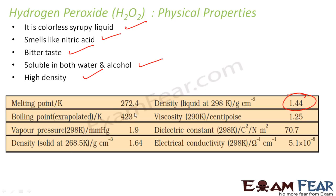The boiling point is 423 K. Viscosity is 1.25. The melting point is 272 kelvin. Similarly, the density is 1.64.